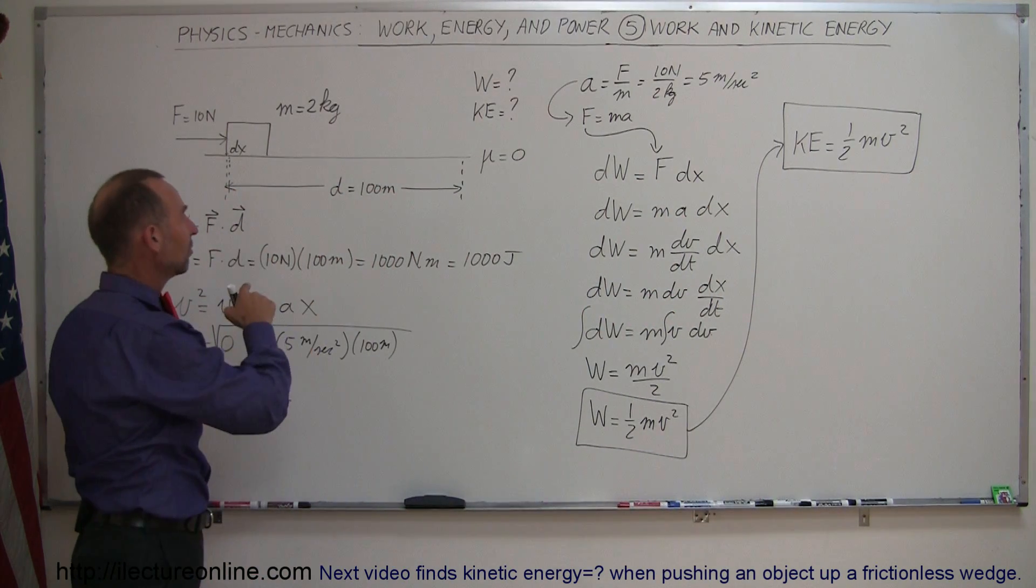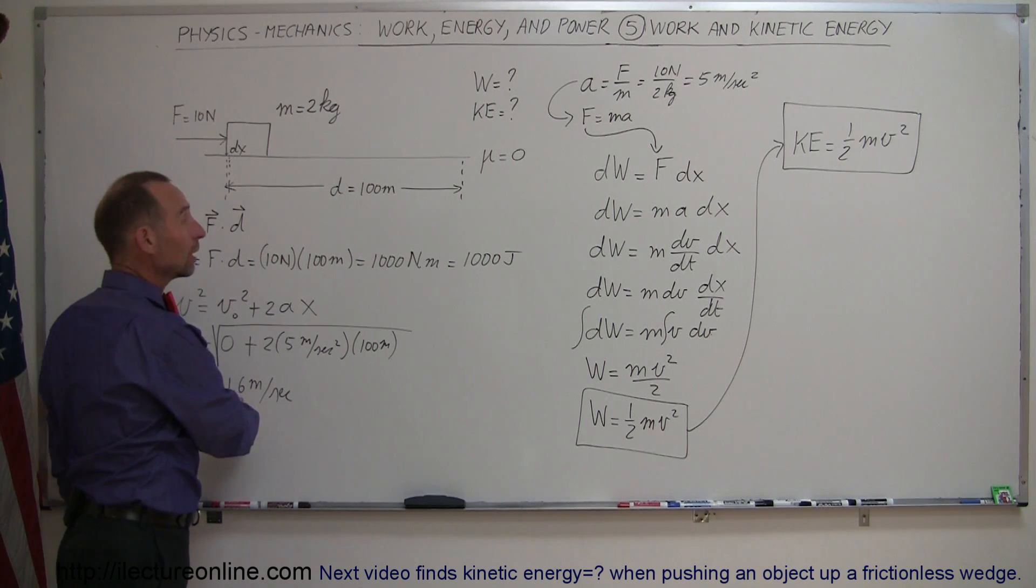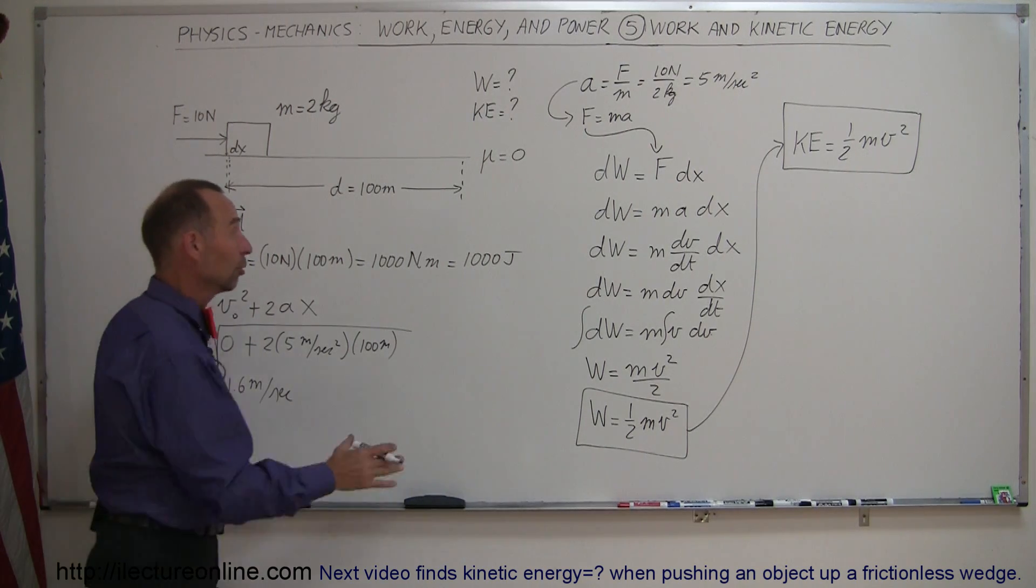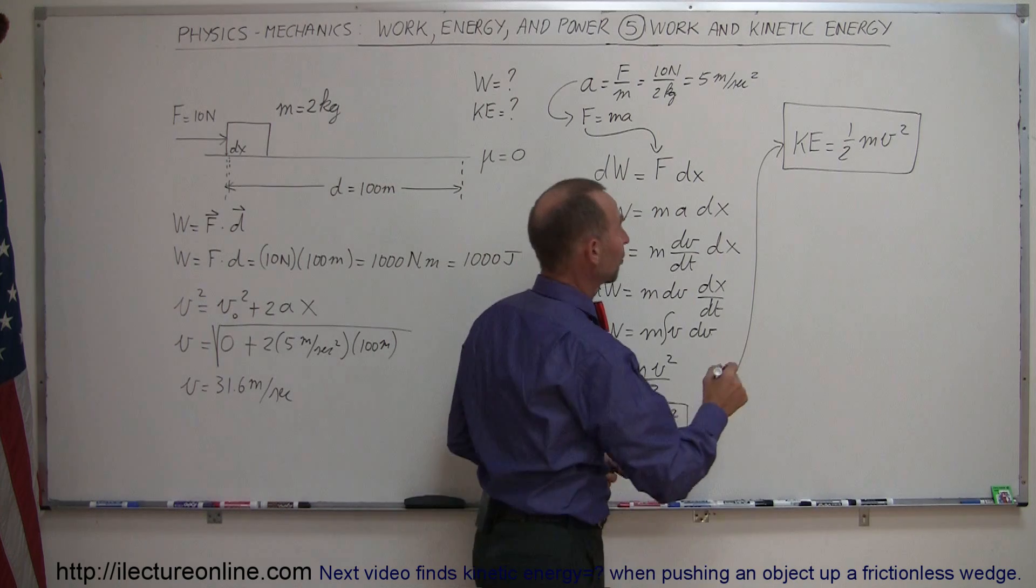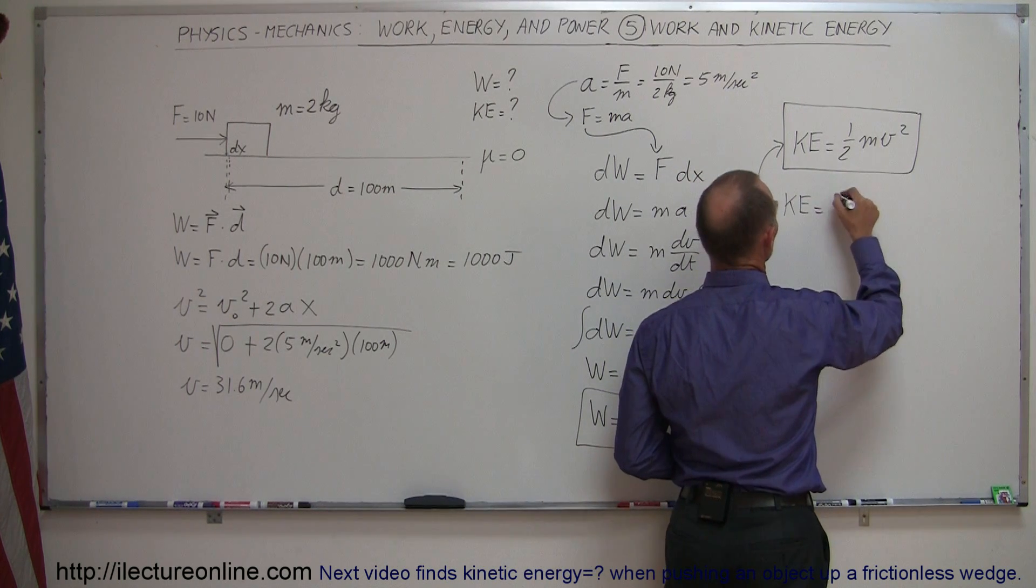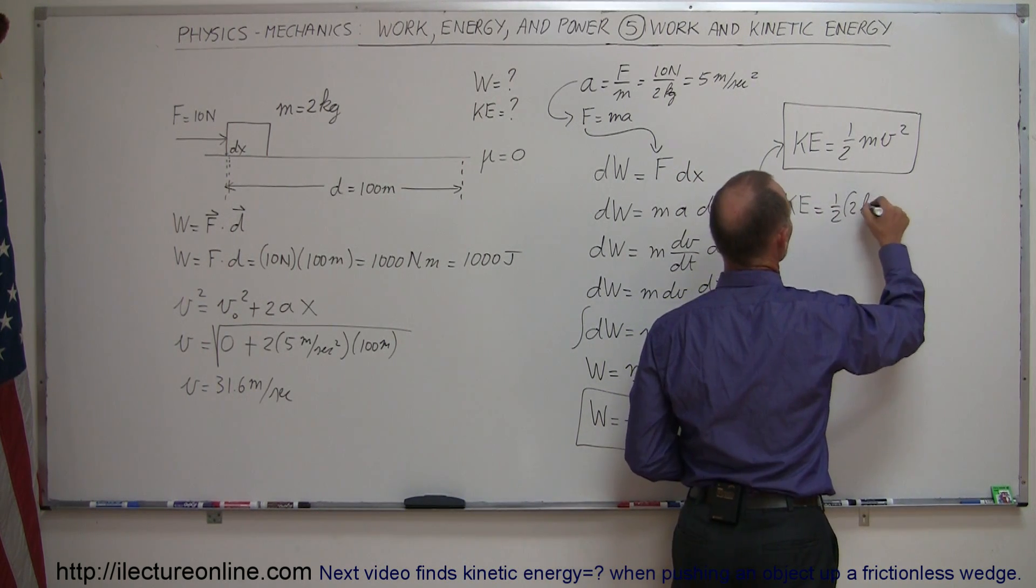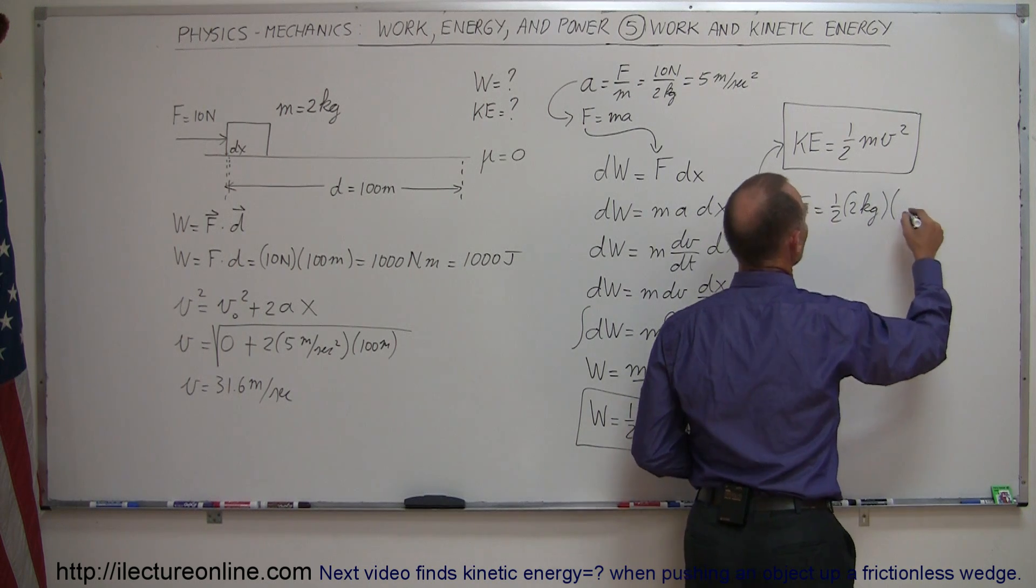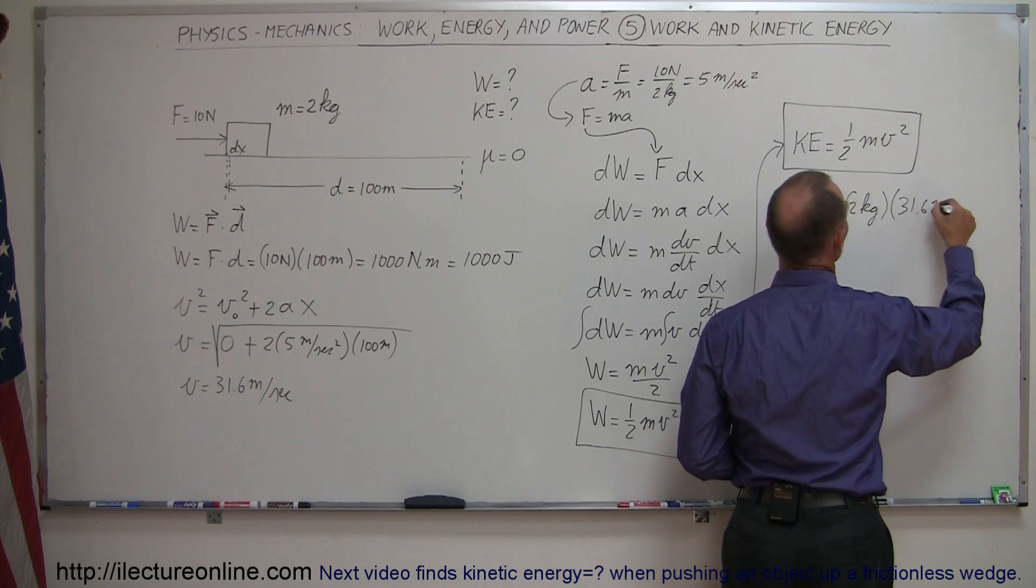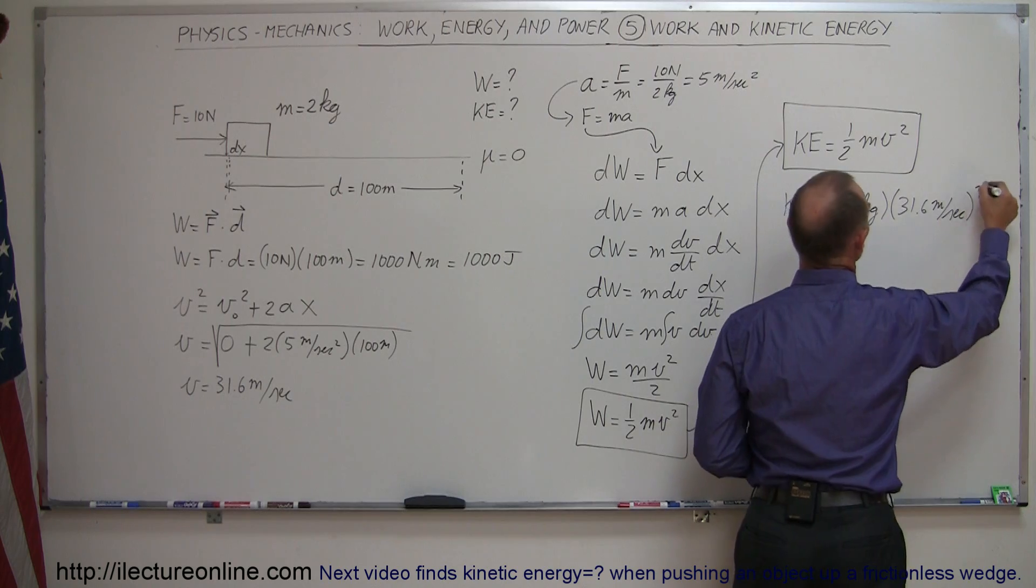If we're now plugging the mass, and we plug in the velocity that we know that it obtained, we hopefully should end up with a thousand joules. So let's find out. Kinetic energy is equal to one half times the mass of two kilograms, times the velocity of 31.6 meters per second squared.